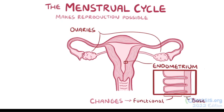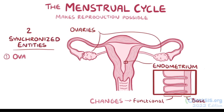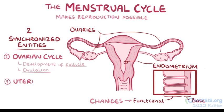The menstrual cycle actually consists of two interconnected and synchronized processes: the ovarian cycle, which centers on the development of the ovarian follicles and ovulation, and the uterine, or endometrial cycle, which centers on the way in which the functional endometrium thickens and sheds in response to ovarian activity.